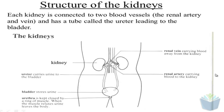Now we're going to look at the structure of the kidneys. Each kidney is connected to two blood vessels. You've got the renal vein, which carries blood away from the kidney, and you have the renal artery, which carries blood towards the kidney. You've also got the ureter, and that is where the urine is transported out towards the bladder.